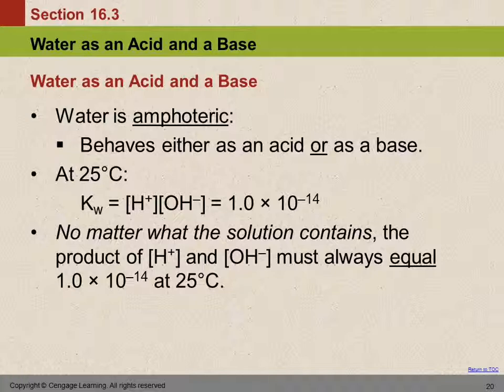So we have a special word that we use, amphoteric. That means that something can act as an acid or a base. And this prefix here, ampho, where have you seen something like that before? Amphibian. Where do amphibians live? In the water and on the land. An amphibious vehicle can drive on land and it can drive in the water. So ampho means dual. It can be either.